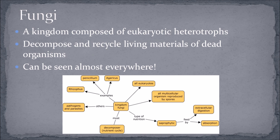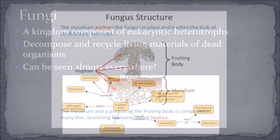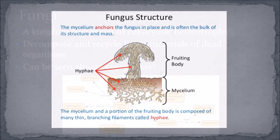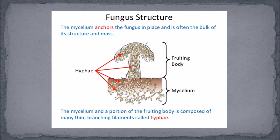A body of a typical fungus is made up of a tangled mass of tiny filaments called mycelium. Each individual filament is called a hypha. The reproductive structure grown from the mycelium is called a fruiting body. Most fungi can reproduce sexually, asexually, or even both. We'll go more into detail about that later.